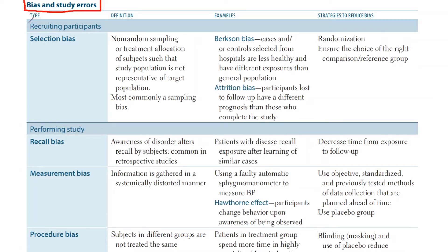We're going to start with the first one, which is under recruiting participants. It's the only bias mentioned in FA 2020, and it's called selection bias. The problem with selection bias is that you are handpicking people, or picking them in a non-random fashion, so you're not getting a representative sample for that population. One of the ways you can fix this is by randomization.